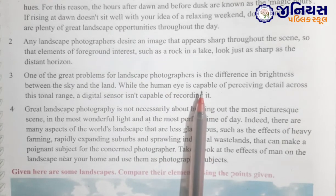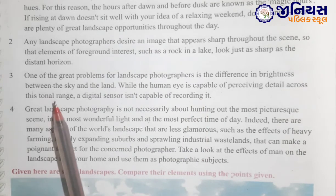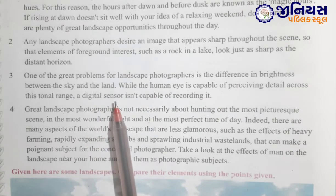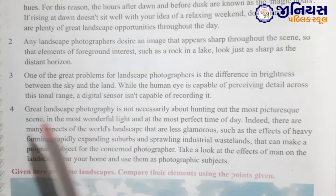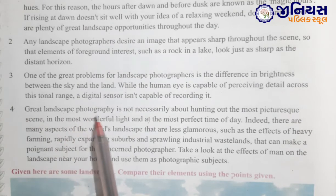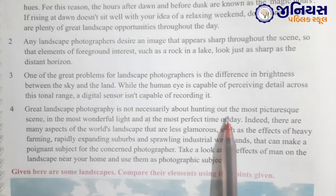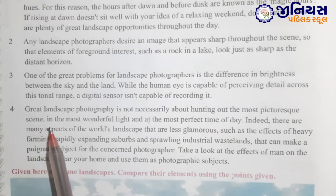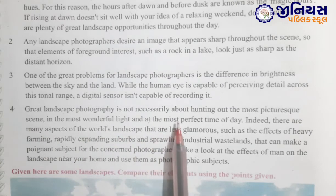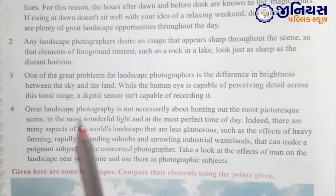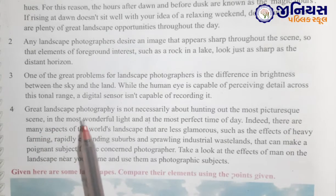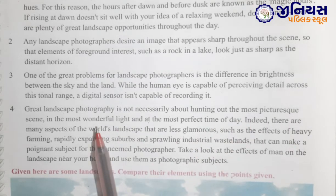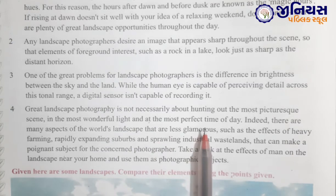While the human eye is capable of perceiving detail across this tonal range, a digital sensor isn't capable of recording it. Human eyes capable hoti hain us range ko perceive karne ke liye, but digital sensor utna capable nahi hota. Fourth tip: great landscape photography is not necessarily about hunting out the most picturesque scene in the most wonderful light and at the most perfect time of day. Great landscape photography mein aisa zaroori nahi hai ki sabse achha scene ho, achhi light ho, aur din ka perfect time ho.